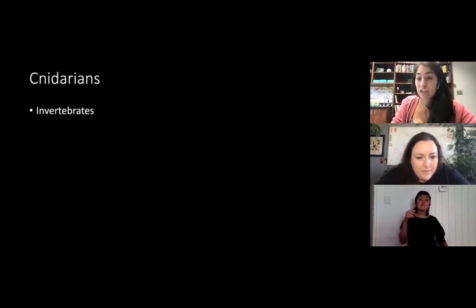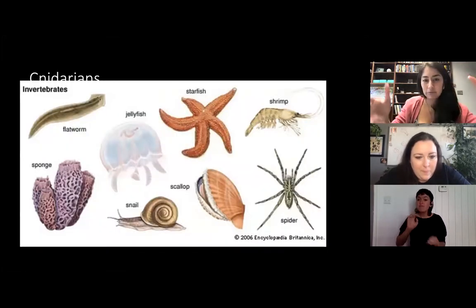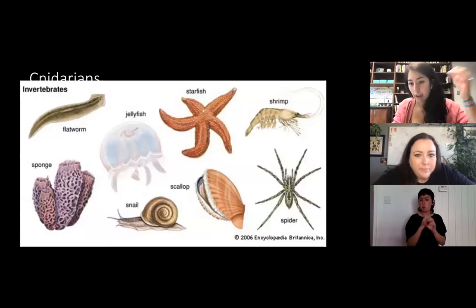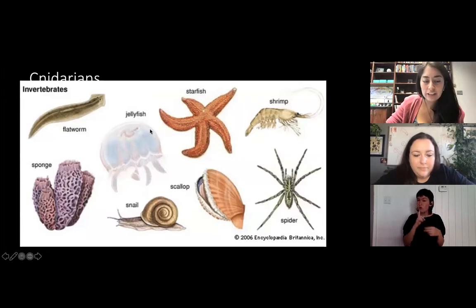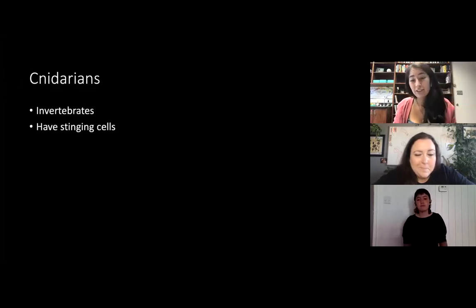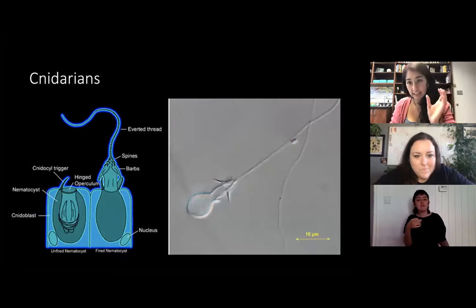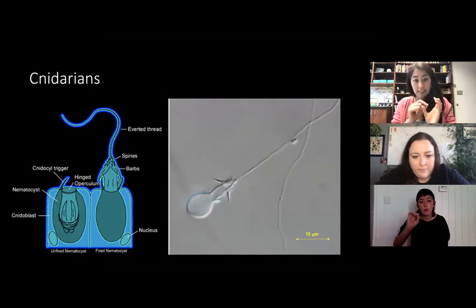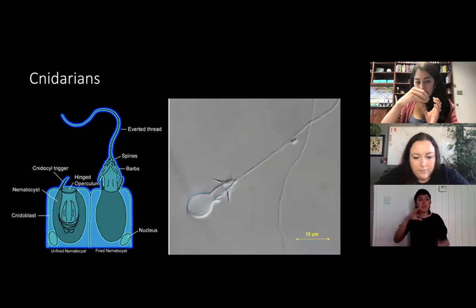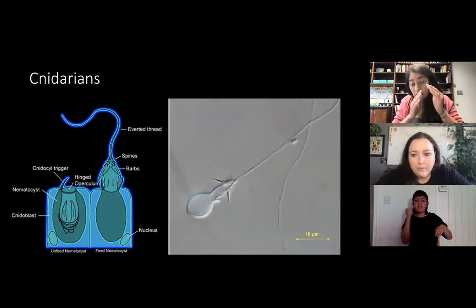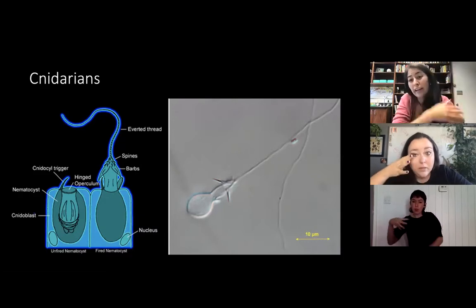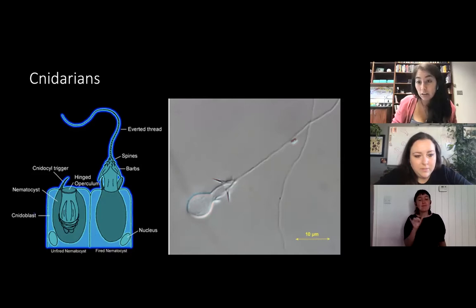Cnidarians are invertebrates, so they don't have a spine. These are images of many invertebrates — none of these things have an actual backbone, they're all pretty squishy. If they have some sort of skeleton, it's on the outside, like spiders and shrimp. Jellyfish are in here. They also have stinging cells — this is one of the main features of being a cnidarian: having a type of cell called a cnidocyte, because "-cyte" means cell. They have a structure called a cnidocyst, or nematocyst, and it's what stings you when you touch a jellyfish. It's mechanically triggered, and when you lightly brush it, it shoots out a very fast harpoon and stings you.